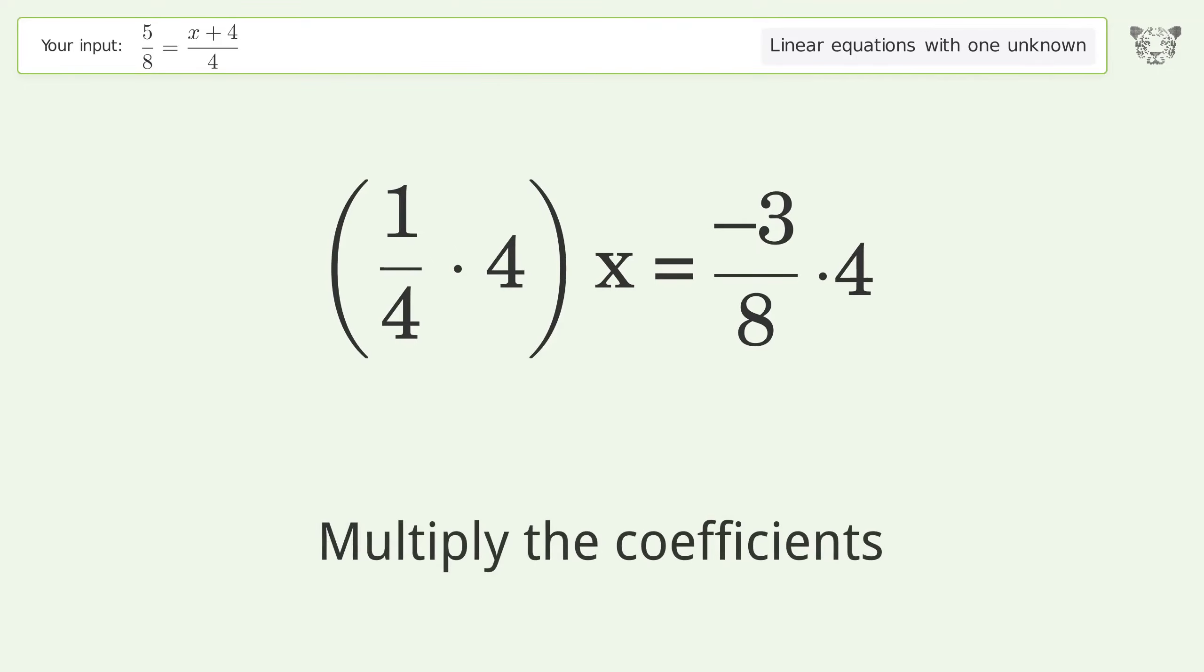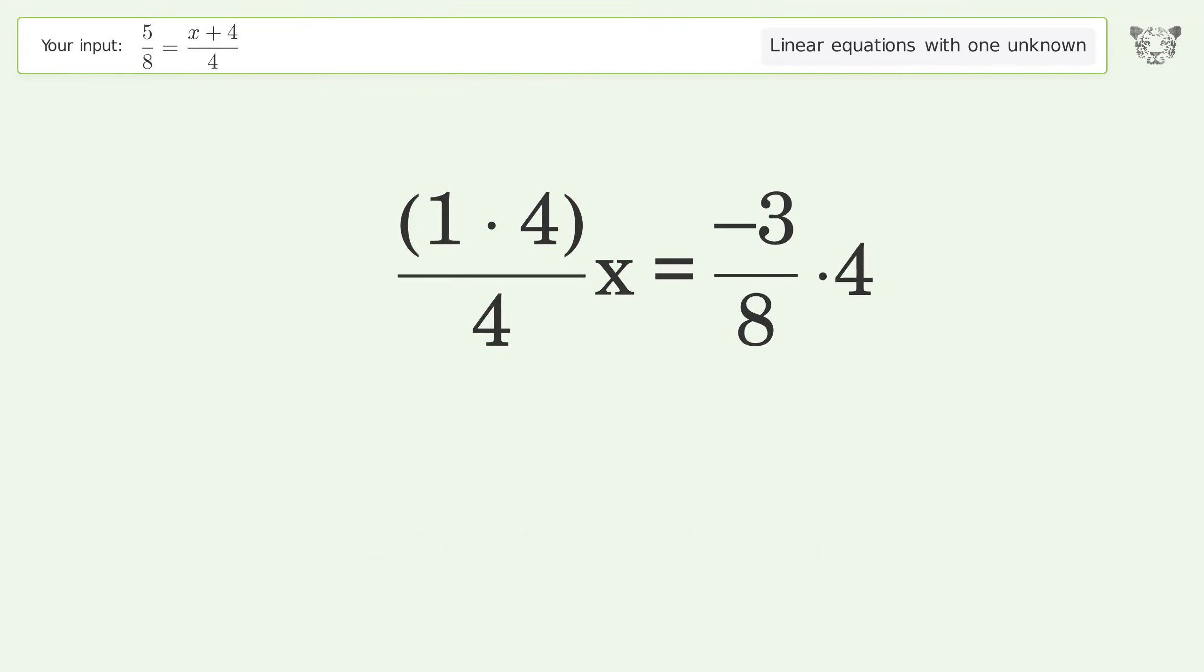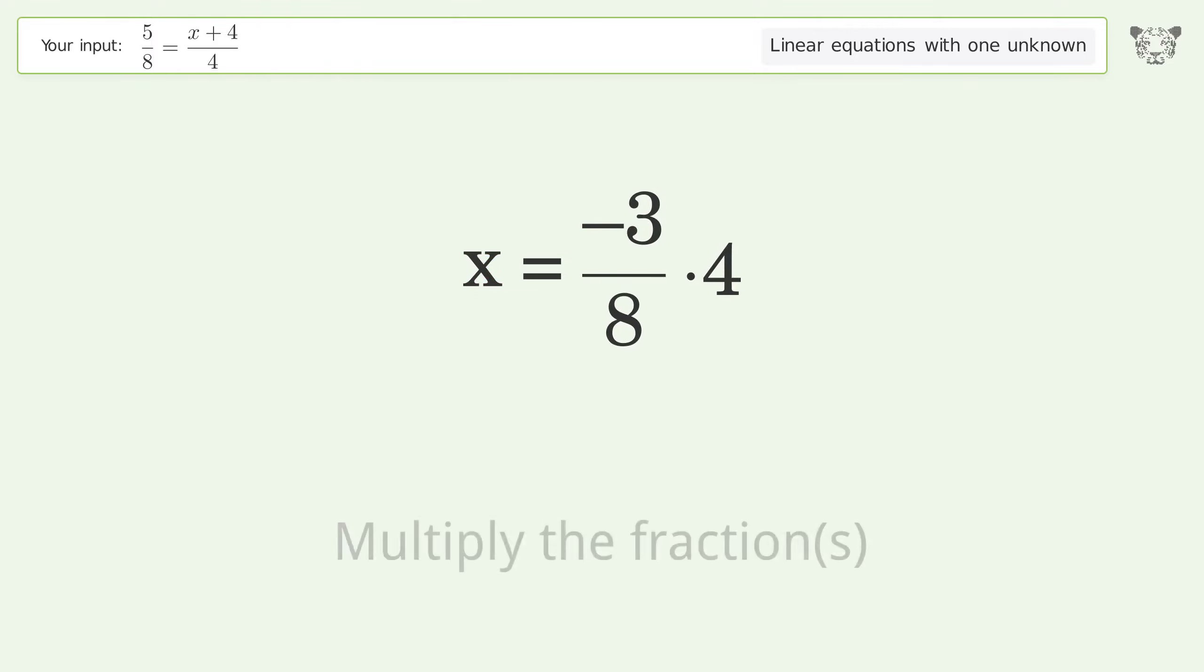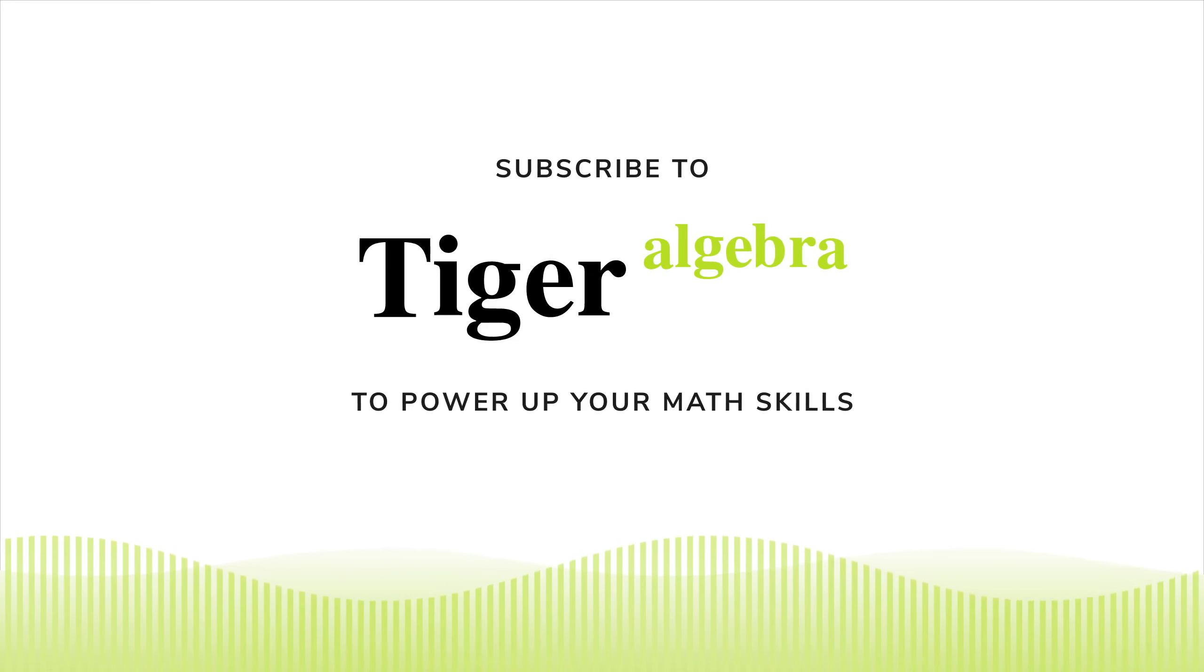Multiply the coefficients. Simplify the fraction. Multiply the fractions. Simplify the arithmetic. And so the final result is x equals negative 3 over 2.